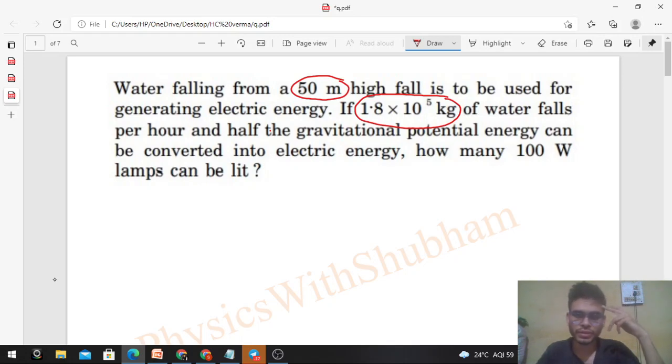So this is the height of the falling, that is given 50 meters, right? In one hour, 1.8 × 10⁵ kilograms, this is the mass of the water. So in one hour, how much potential energy do we have? In one hour you can see m × g × h, right?